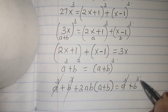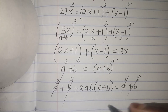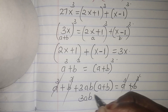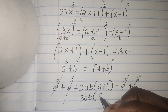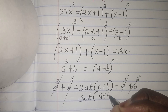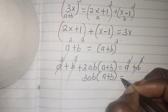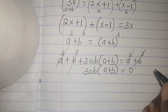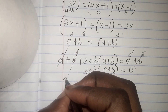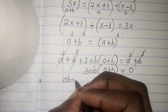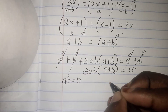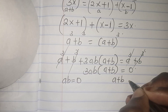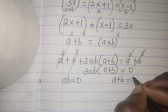Expanding: (a plus b)³ equals a³ plus b³ plus 3ab(a plus b). So a³ plus b³ cancels with a³ plus b³, and we are left with 3ab(a plus b) equals 0. So we have two solution cases: ab equals 0, or a plus b equals 0.